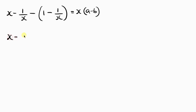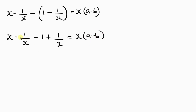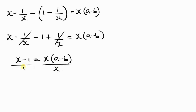So we have x minus 1 all over x, and using the minus to open the bracket: minus 1, then minus times minus gives plus 1 all over x, equal to x times a minus b. Notice I have minus 1 over x plus 1 over x, so those cancel out, leaving x minus 1. So x minus 1 equals x times a minus b. Now I need x on one side, so I divide both sides by x, giving a minus b equal to x minus 1 all over x.